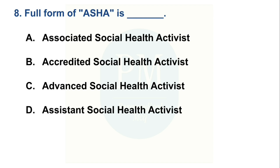The full form of ASHA is: Option A: Associated Social Health Activities, Option B: Accredited Social Health Activities, Option C: Advanced Social Health Activities, Option D: Assistant Social Health Activities. The correct option is Option B, Accredited Social Health Activities.